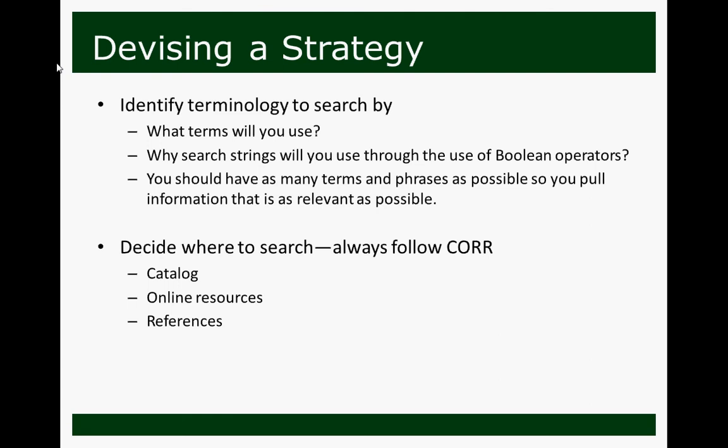The second part of devising your strategy is, once you know what you're going to search by, determine where you're going to search. Always follow CORR — C-O-R-R — which means searching the catalog first, then online resources, and then reference works.